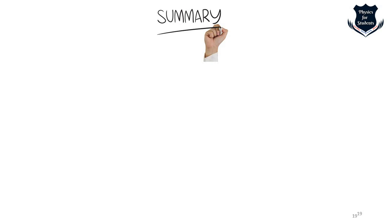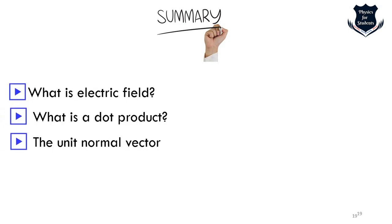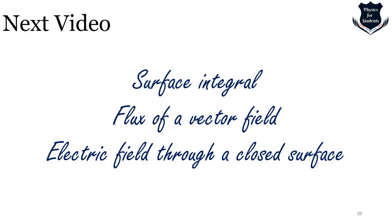To summarize, in this video we learned what an electric field is, what a dot product is, and why Gauss's law uses a dot product. We also learned what the unit normal vector is. In the next video, we will cover what a surface integral is, what is the flux of a vector field, and what we mean by electric field through a closed surface.